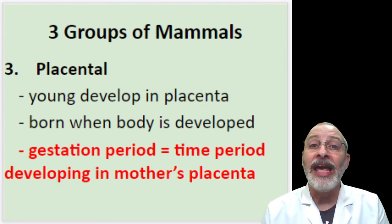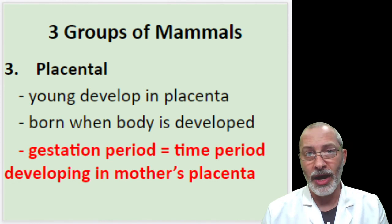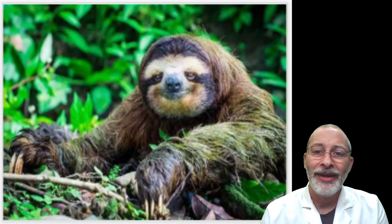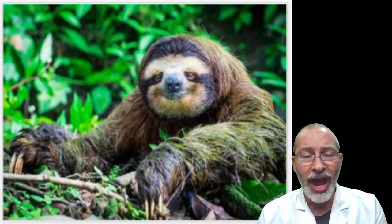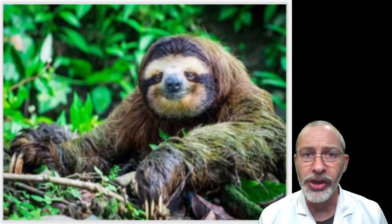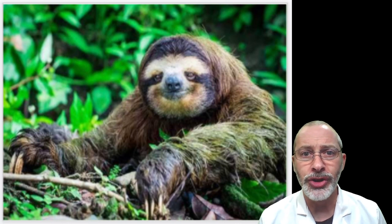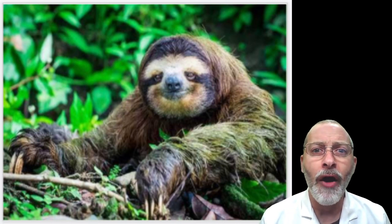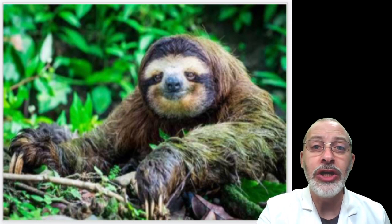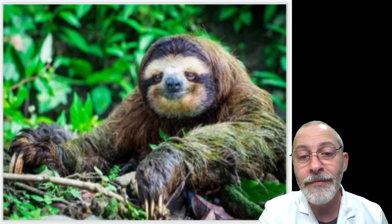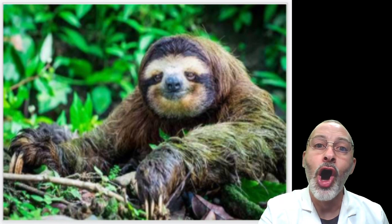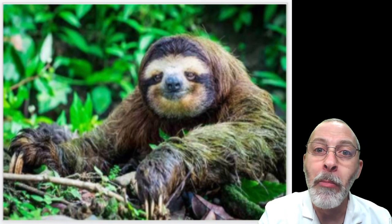So we've gone over the five characteristics that all or most mammals possess, and we've gone over the three groups of mammals. We'll end with a picture of one of my favorite mammals — the sloth. As we finish this first day of notes, we say goodbye to the sloth — bye bye!